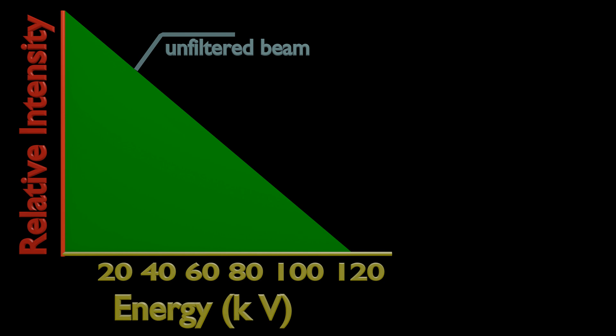For an unfiltered beam, intensity of X-ray beam is high for low-energy X-rays and intensity is low for high-energy X-rays.